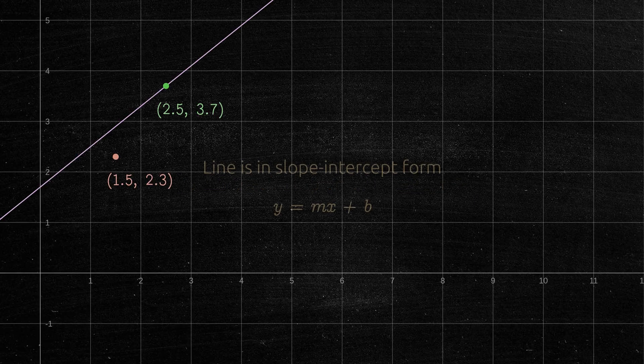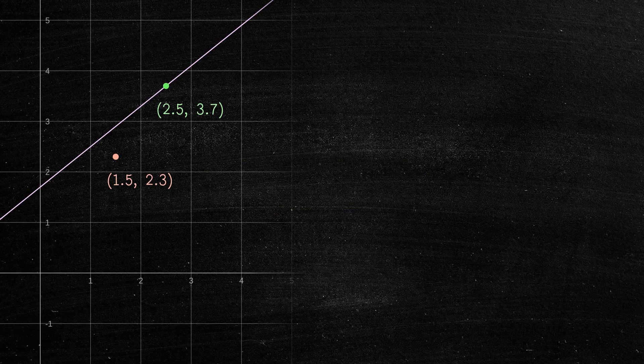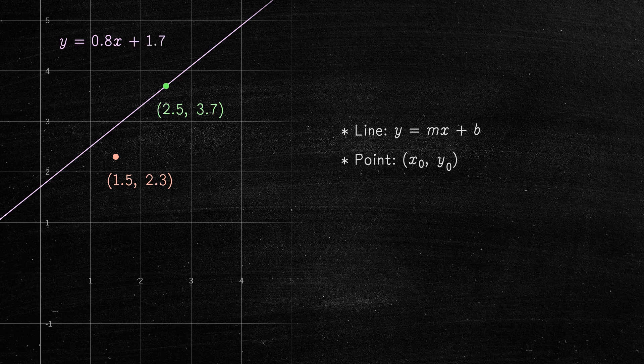The first case is when the line is given in slope-intercept form. For example, suppose this is the line, and this is the point. The point lies on the line if the following equality holds.